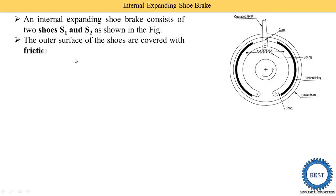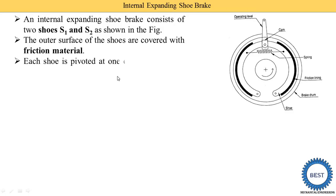The outer surface of the shoe is covered with the friction material. This is the shoe and this is called the outer surface. On the outer surface, the friction material — the friction lining — is provided. This is called the internal surface of the shoe, and this is the outer surface of the shoe. On the outer surface we provide the friction lining or friction material.